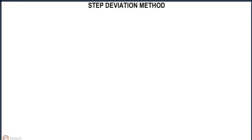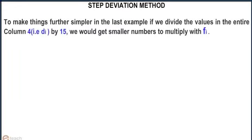Step deviation method. To make things further simple in the last example, if we divide the values in the entire column fourth, given by di, by 15, we would get smaller numbers to multiply with fi.